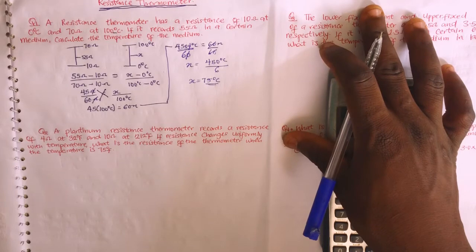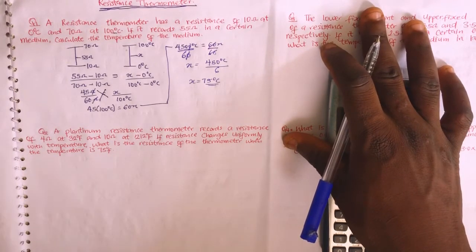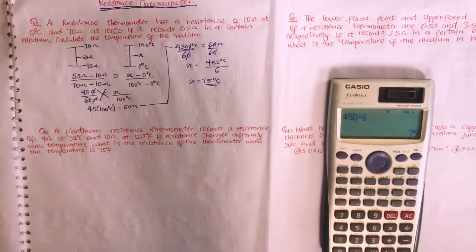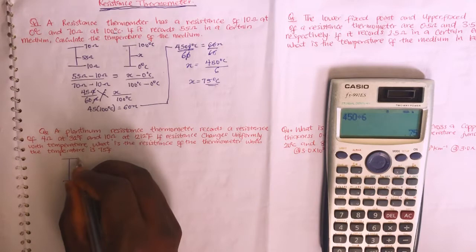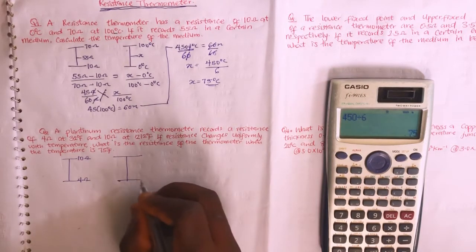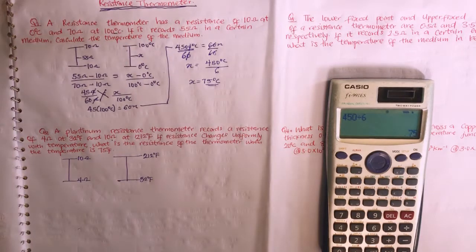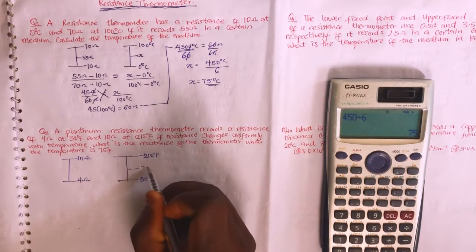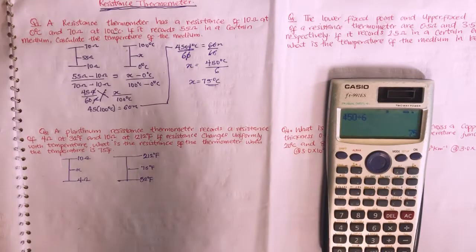The second question: a platinum resistance thermometer records a resistance of 4 ohms at 32°F and 10 ohms at 212°F. The two scales are Fahrenheit and resistance (ohms). The lower fixed point on the Fahrenheit scale is 32°F and the upper fixed point is 212°F. If resistance changes uniformly with temperature, what is the resistance when the temperature is 75°F? We call the unknown resistance x.